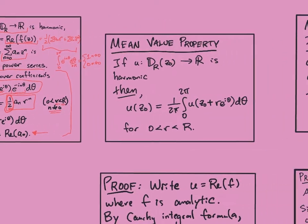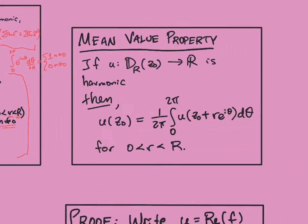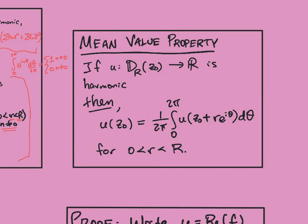Another important property of harmonic functions is the mean value property. So if u is defined on the disk of radius r centered at z naught, if it's harmonic, then I can recover the value at the center of this disk by taking its mean value along a circle of radius little r less than big R.